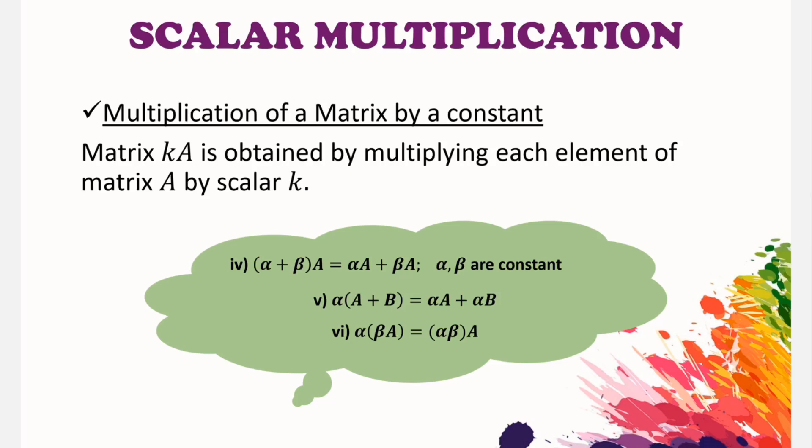So what is a scalar multiplication? The product of the constant K and matrix A is obtained by multiplying each element of matrix A by the scalar K.